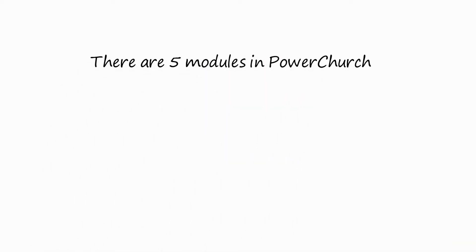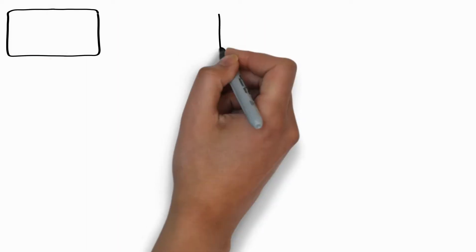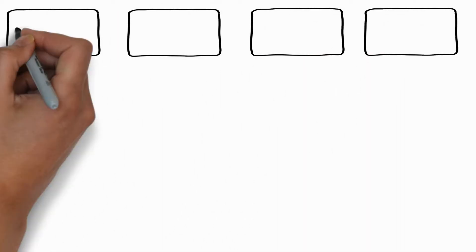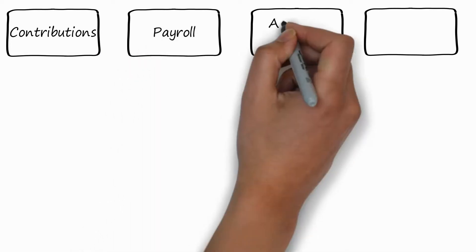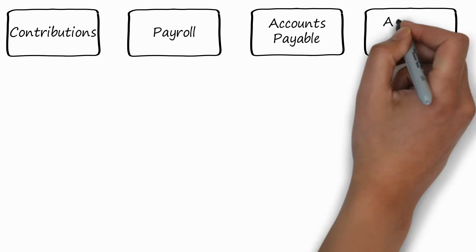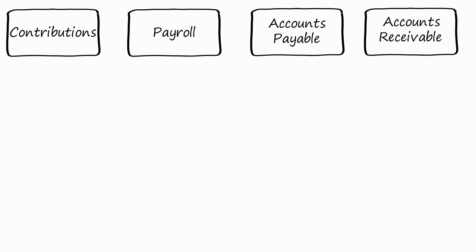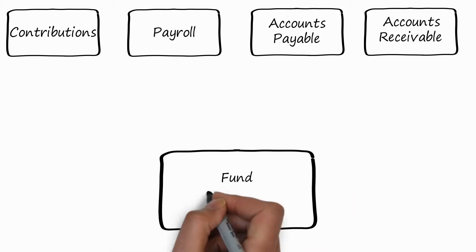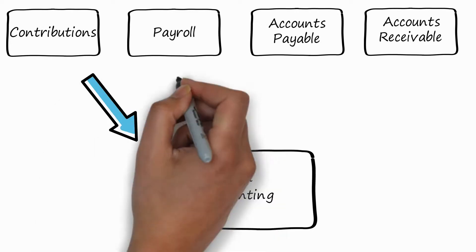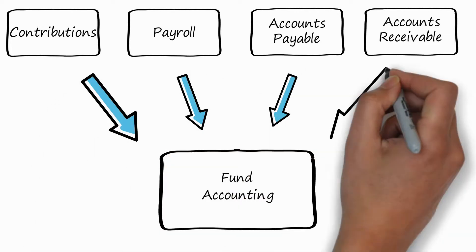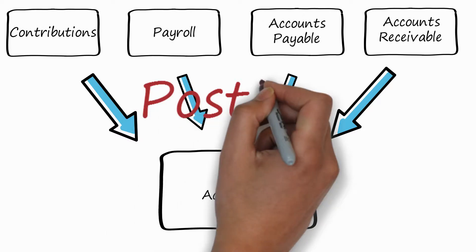The accounting software is made up of five modules. By modules, they are almost like stand-alone softwares within a software, and PowerChurch integrates them — things like contributions, payroll, accounts payable, and accounts receivable. These four modules feed their information into the main module called fund accounting. The fund accounting module is like the general ledger of a business. Each of the other modules feeds its data to the fund accounting module for permanent record keeping. This process is called posting, or posting your data into fund accounting.